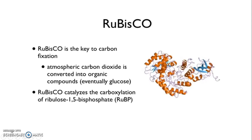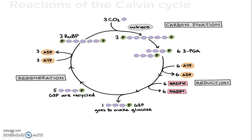So let's go over the steps of the Calvin cycle. The Calvin cycle starts with RUBP, also called ribulose bisphosphate, which is a five-carbon molecule.